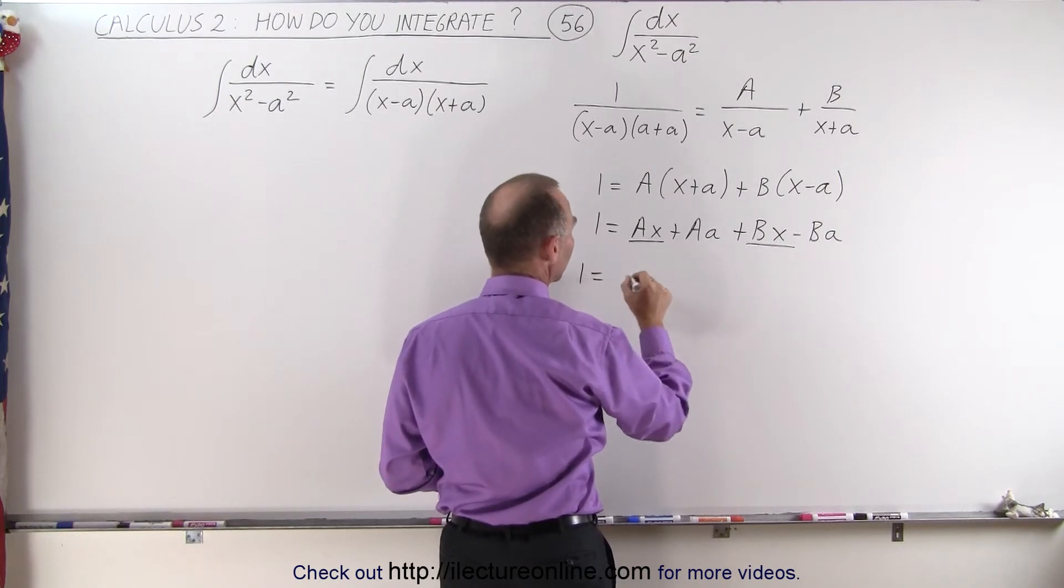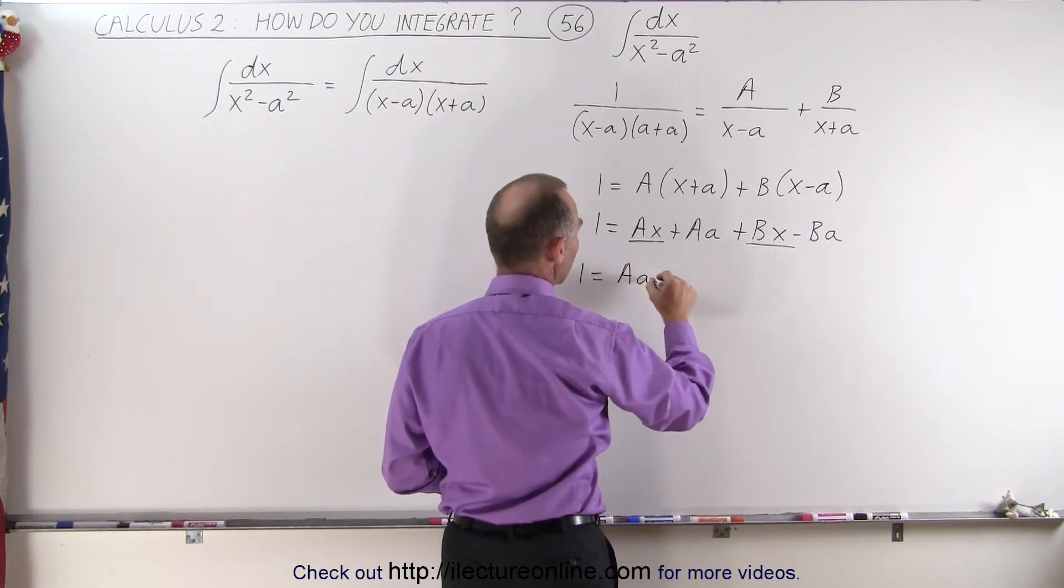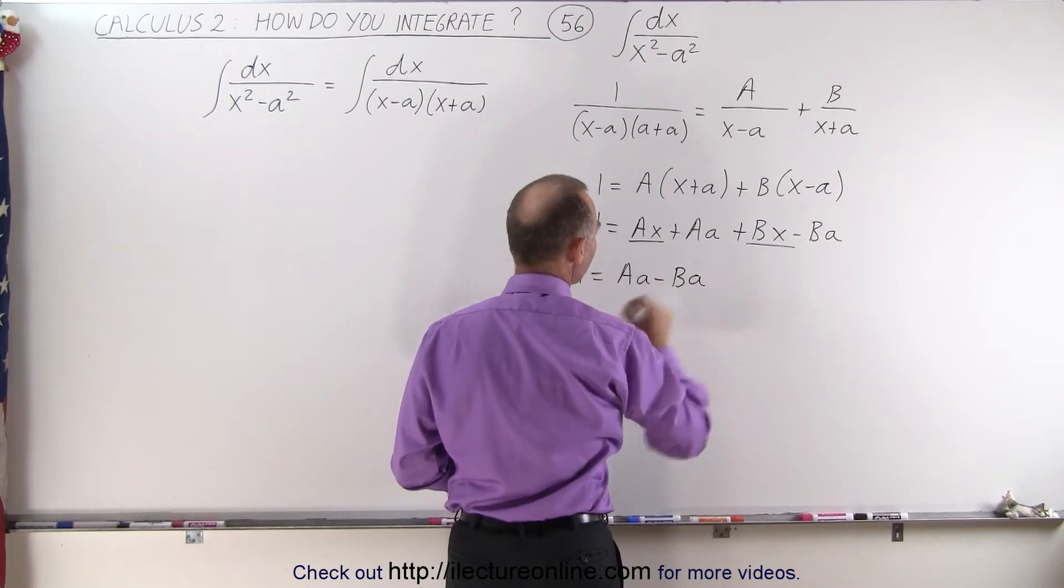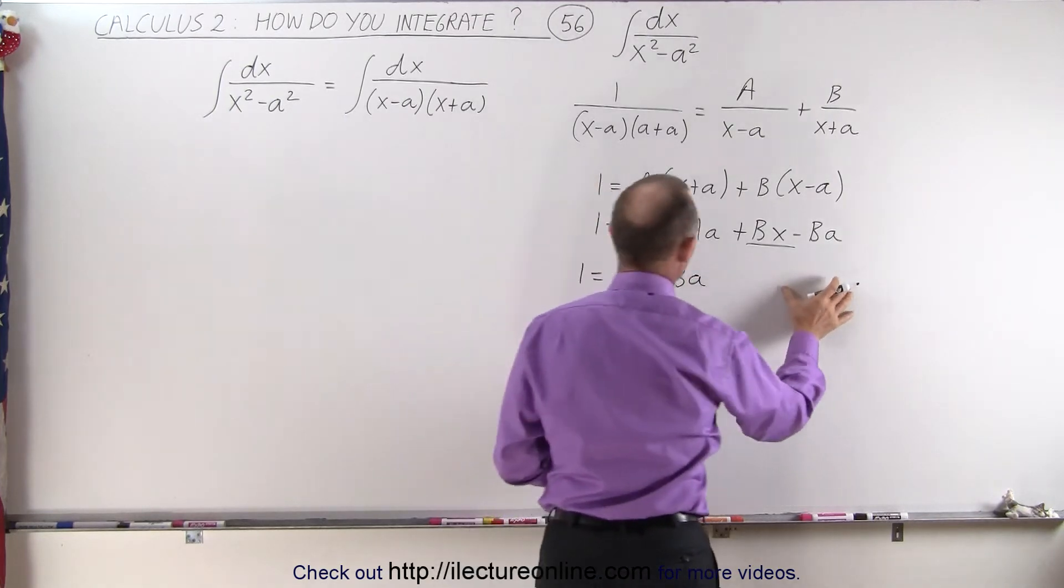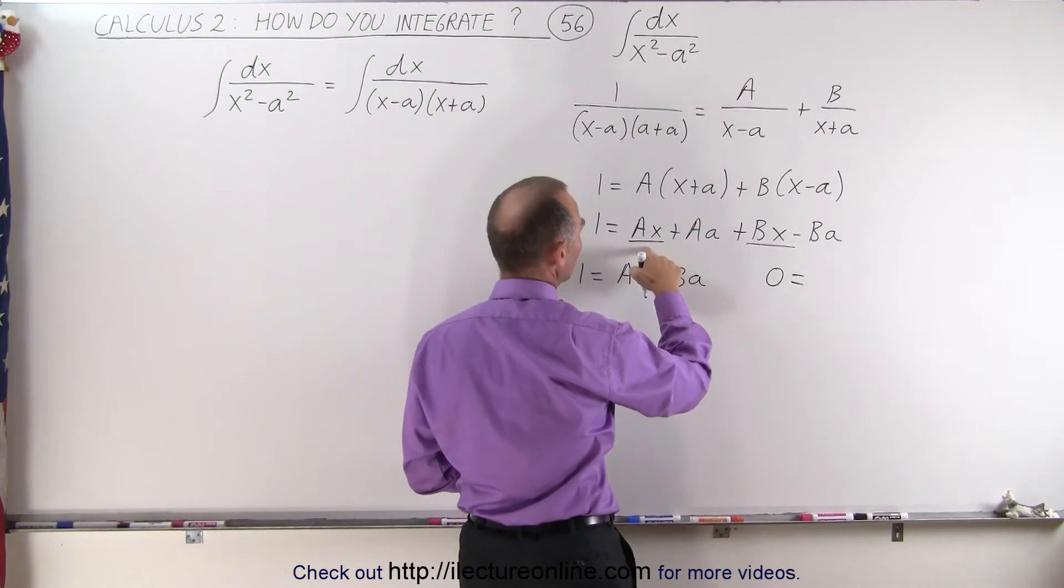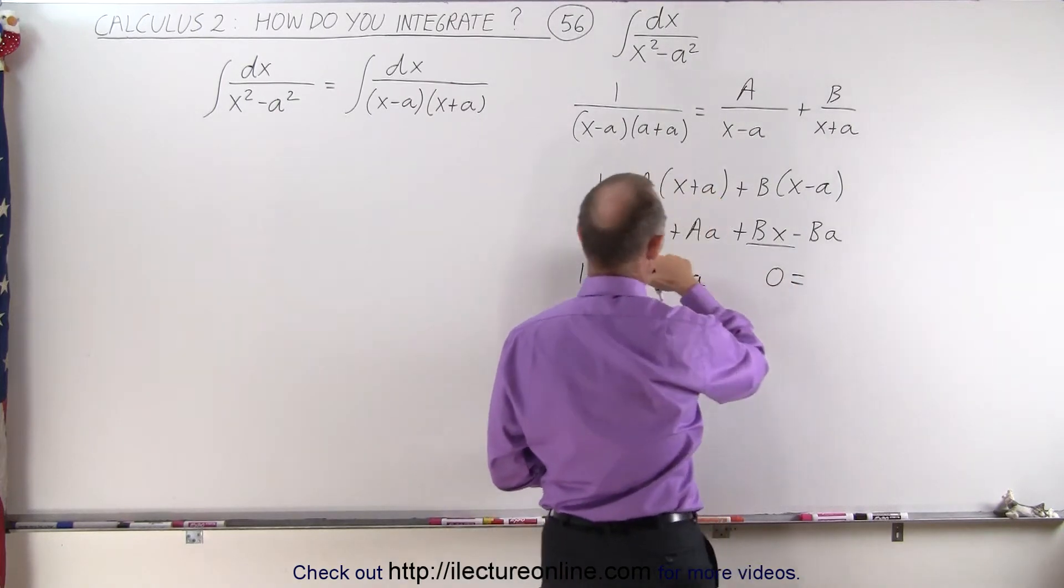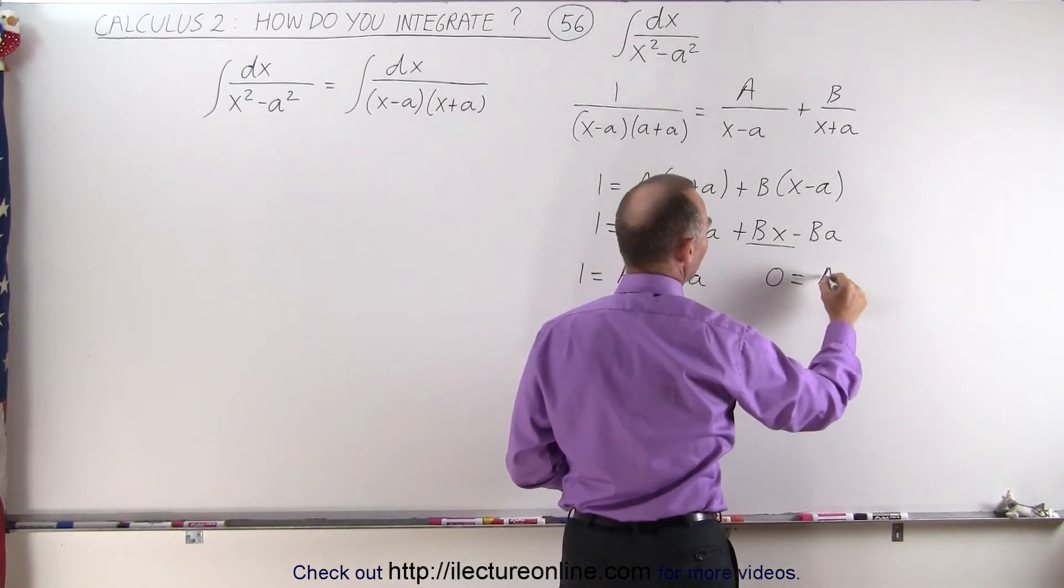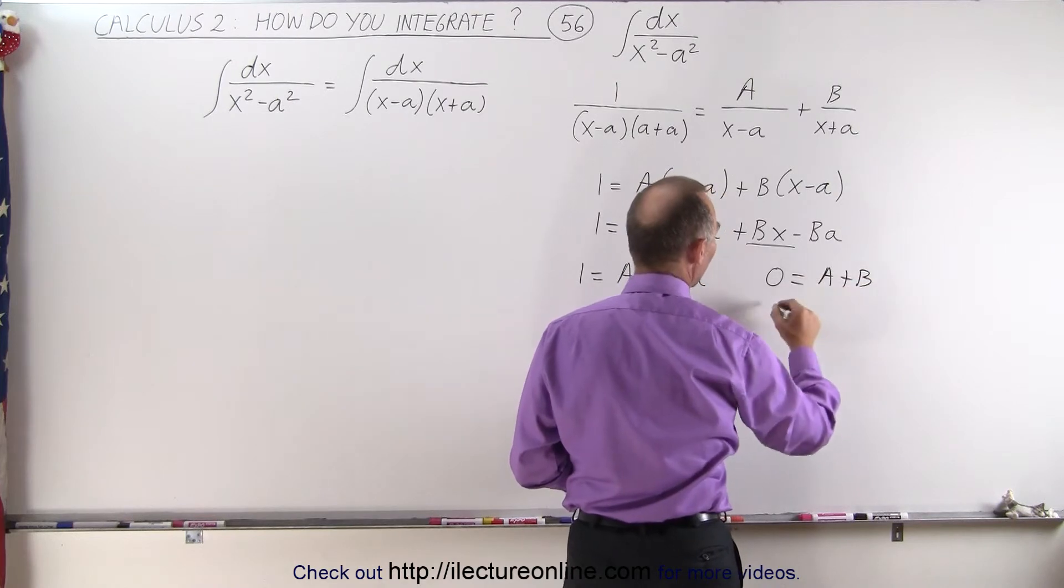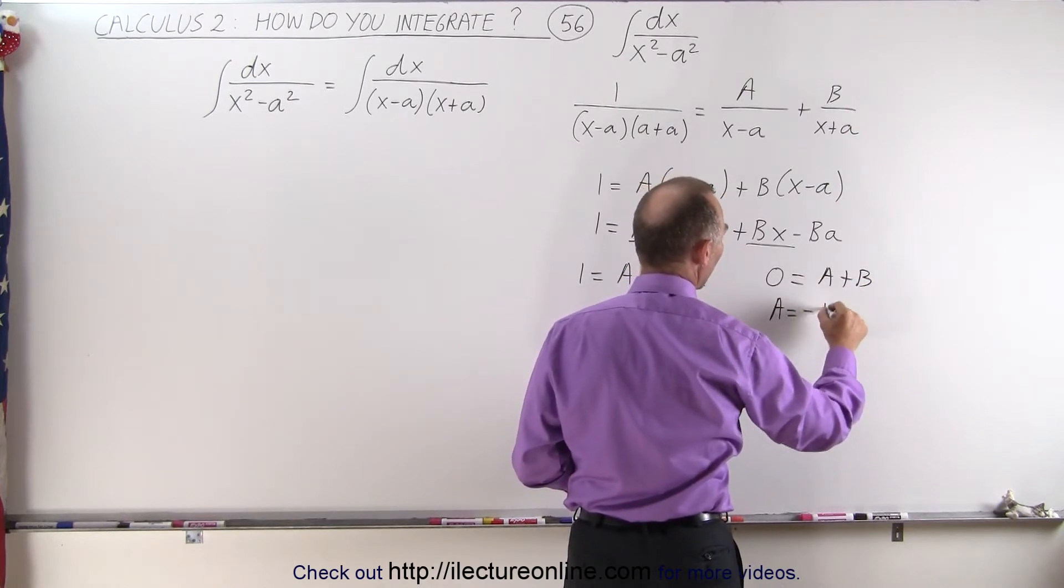So 1 becomes equal to Aa minus Ba. And on the second equation, we get 0 is equal to A because we just need the constants A plus B, which means in this case A is equal to minus B.